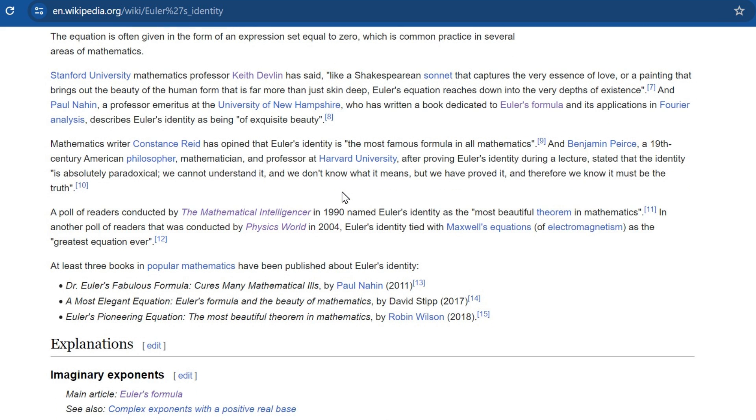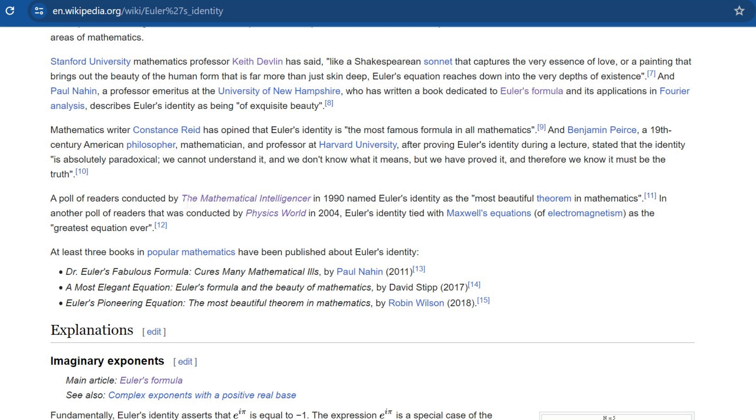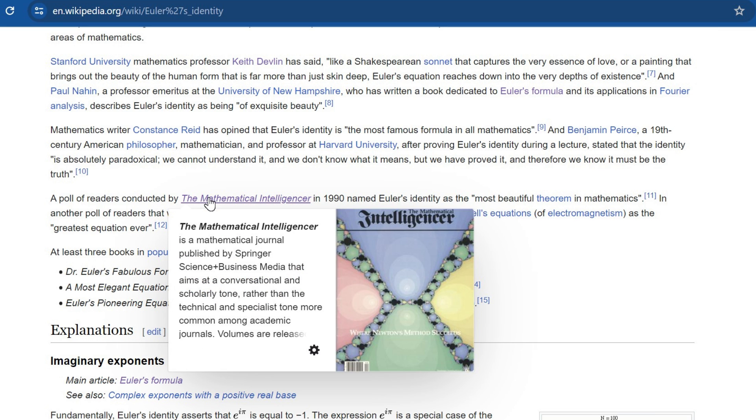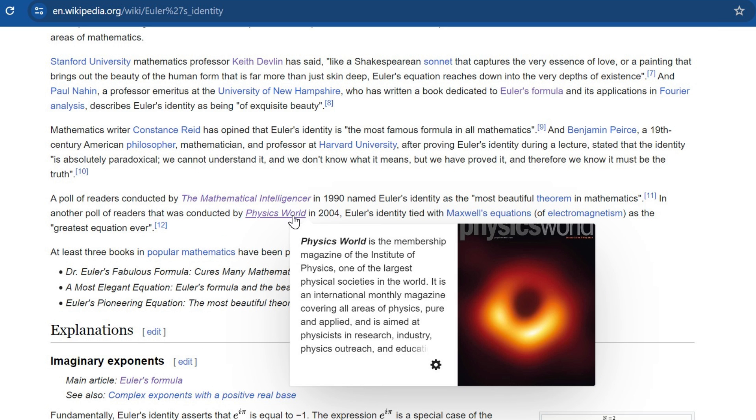Surveys conducted by popular journals and scientific magazines such as the Mathematical Intelligencer and Physics World have named Euler's identity the most beautiful theorem in mathematics. But what makes it so special?